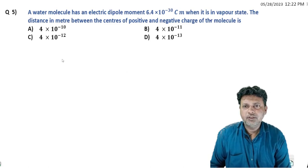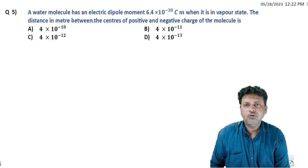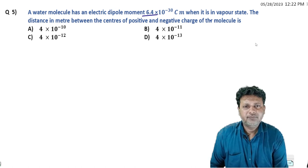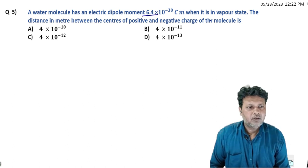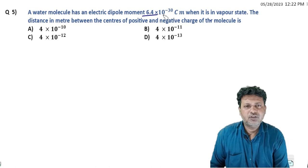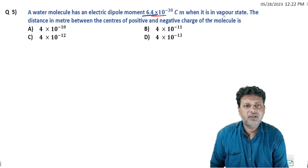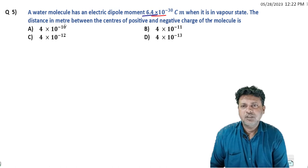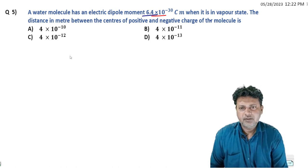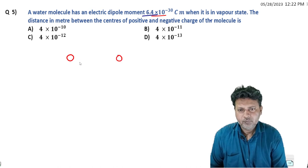So next question: a water molecule has an electric dipole moment 6.4×10^-30 Cm when it is in vapor state. The distance between the center of positive and negative charge. If we draw it here: minus q, plus q, we need to find the distance between them.